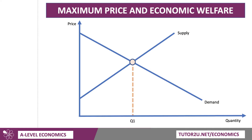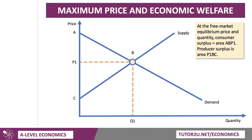Let's consider a market that initially is in equilibrium at quantity Q1 and the price is P1. I like putting letters on diagrams — and don't forget to label diagrams, don't shade them in the exam. So our market is initially in equilibrium, and at that free market equilibrium price — that means the price without any government intervention — consumer surplus equals area ABP1, the area below the demand curve and above the price. Producer surplus is the area above the supply curve and below the price, and that equals area P1, B, C.